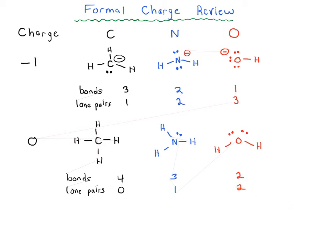And so let's look at our final example, and that is for plus one. So for plus one, hopefully we won't run out of space here. We've got CH3, we've got bonds, lone pairs. So for CH3 it's got three bonds and zero lone pairs here.